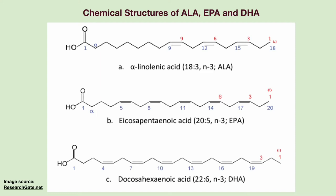This slide shows the chemical structures of three major types of omega-3 fatty acids, or omega-3s. Omega-3 fatty acids have a carbon-carbon double bond located three carbons from the methyl end of the chain. The upper chemical structure in this slide is ALA, which contains 18 carbons and 3 double bonds.